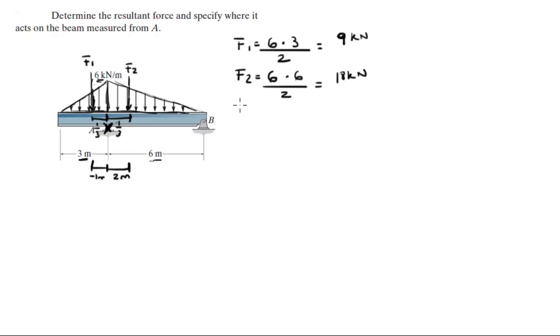Now that we got the two forces, let's find the resultant force which is the sum of the forces. And it's F1 plus F2. Let's say going down is positive since they're all going down, so 9 plus 18 is equal to 27 kilonewtons. That's the resultant force.